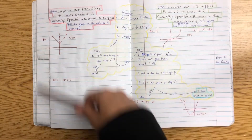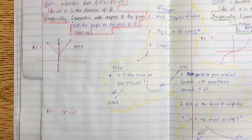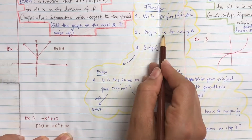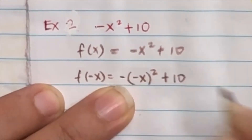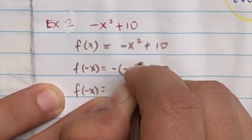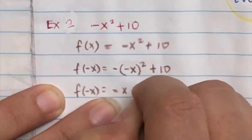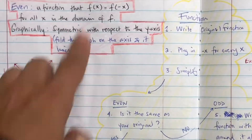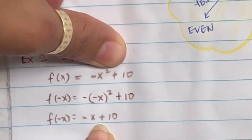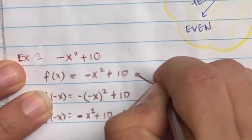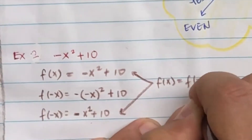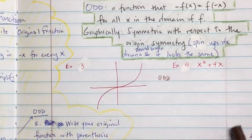Graphically is the easiest method, but if you can't determine it graphically, you can look at it as a function. Here are the steps: write down the original function, then substitute negative x for every x to find f(-x). For example, that gives you negative x squared plus 10, which simplifies to x squared plus 10. If that is exactly the same as the original f(x), then it is an even function.